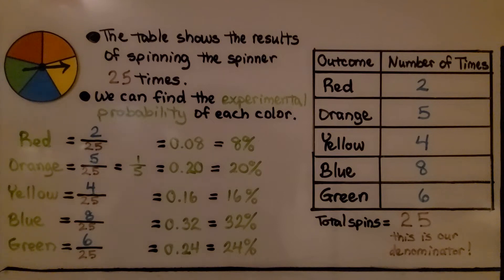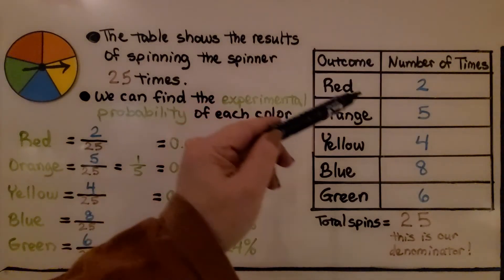So here you can see we've got a table, and the table shows the results of spinning the spinner twenty-five times. We can find the experimental probability of each color.